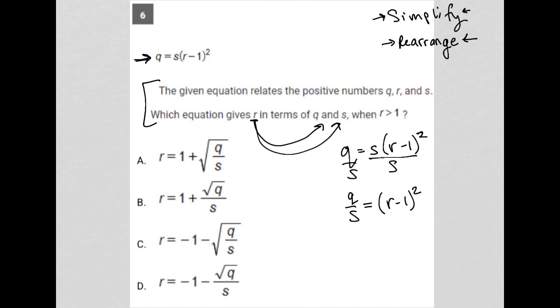I did that so that I can then square root this entire side here to get rid of the squared on the right side. So now I'm left with the square root of Q over S is equal to R minus one.